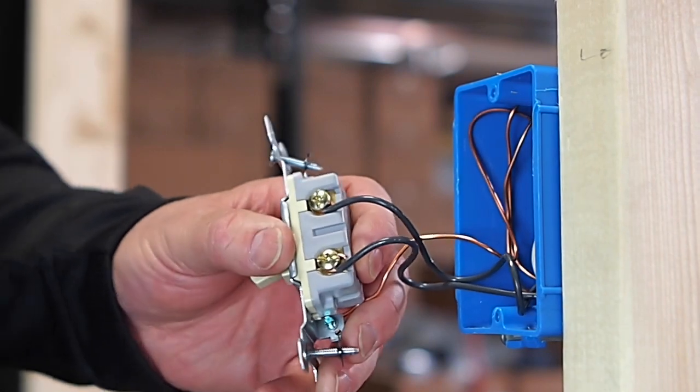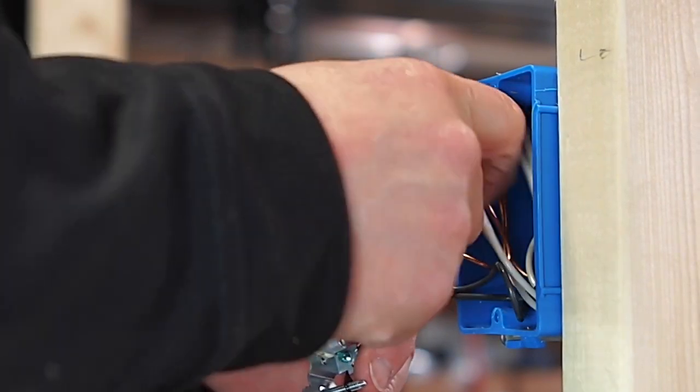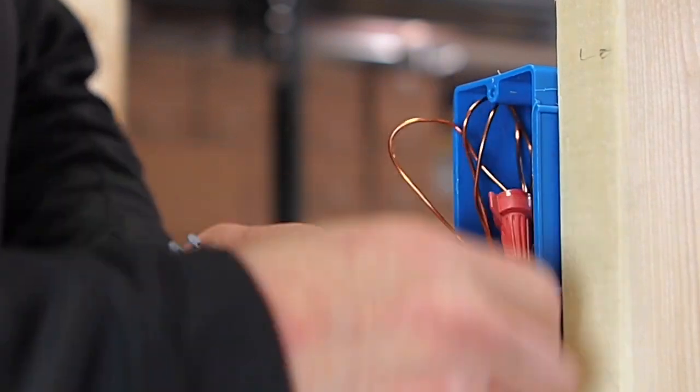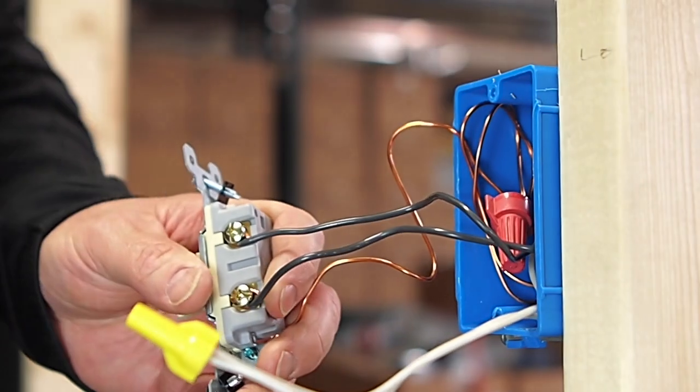Basically, what we are going to do is do away with the power source to this switch. We are going to power the fan up from up above. So we just need to unhook these wires.